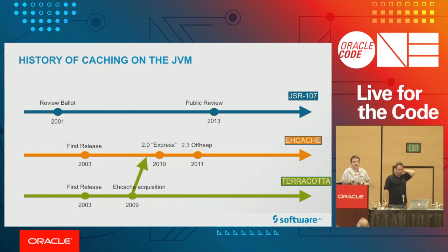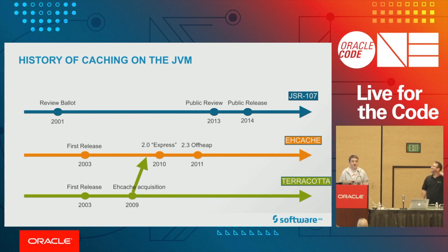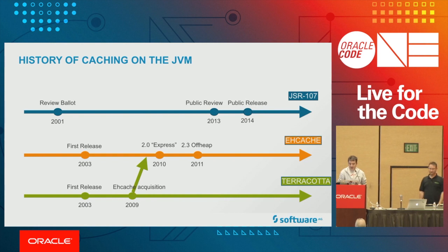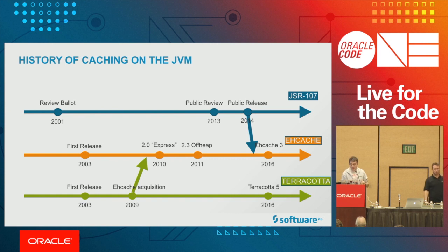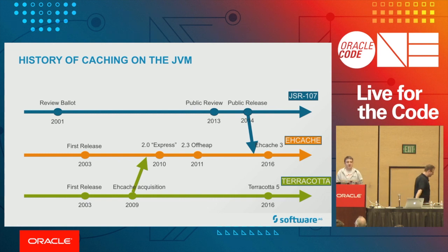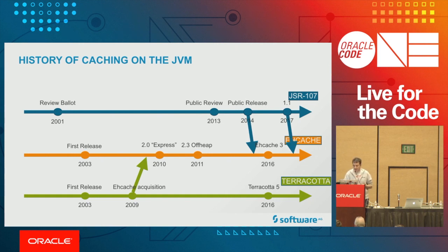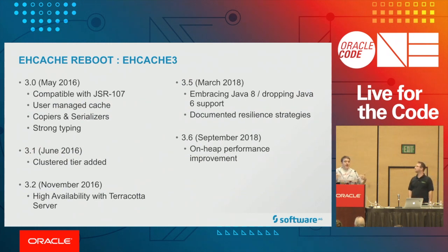Back to JSR-107: 12 years later, the public review happened and soon after, the public release. Java now has an official caching spec. Thanks to that, EhCache embraced this specification for the latest version — and competitors did the same. So moving between caching libraries isn't that hard API-wise since everyone embraces this API. JSR-107 1.1 came out the following year — a small update — and EhCache 3 was released in 2016, already compatible with JSR-107.